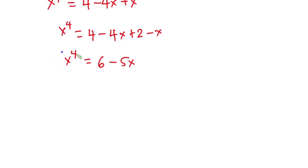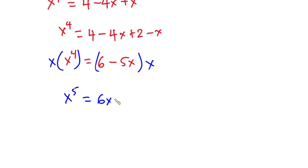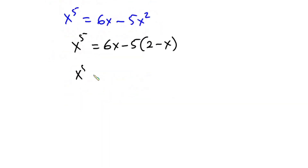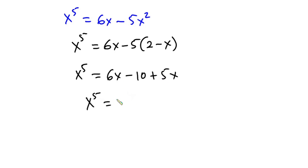Now let's multiply each side of this equation by x. So we have x to the fifth power equals 6x minus 5x squared. We still know what x squared is from equation 1, so substituting: x to the fifth power equals 6x minus 5 times (2 minus x), which gives 6x minus 10 plus 5x. So x to the fifth power equals 11x minus 10.